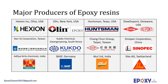Let's talk about the major producers of epoxy resins. Hexion Inc. is a chemical company based in Ohio, USA, founded in 1899; it produces thermoset resins, related technologies, and specialty products. Olin Corporation is an American manufacturer of chemicals based in New York, USA, founded in 1892 — Olin Epoxy is the division that produces epoxy. Huntsman Corporation is an American multinational manufacturer and marketer of chemical products based in Texas, USA, founded in 1970; Huntsman manufactures products for customers like BMW and General Electric.